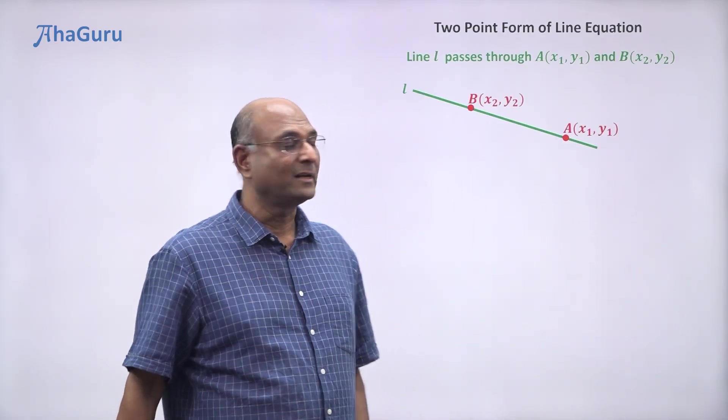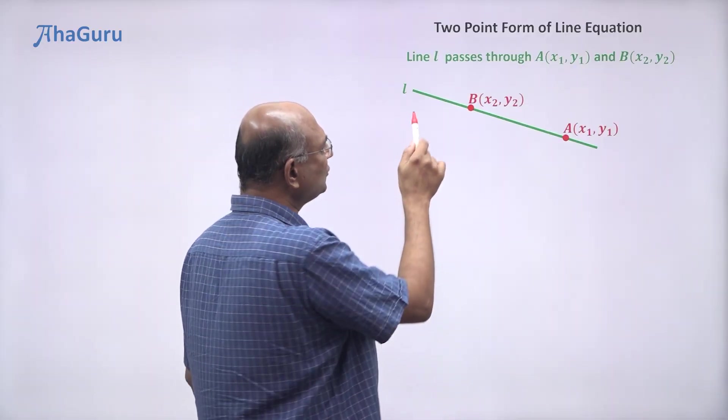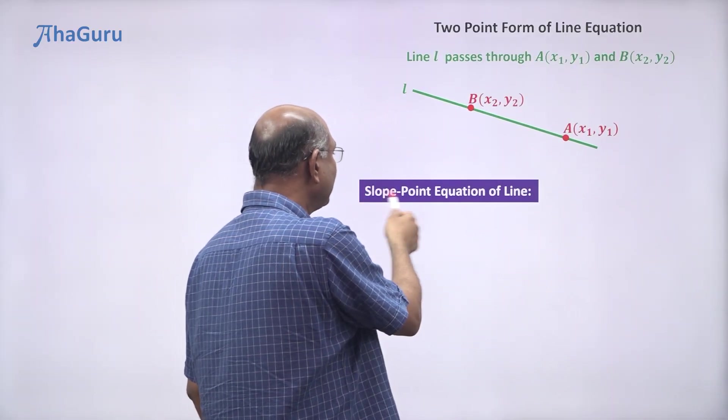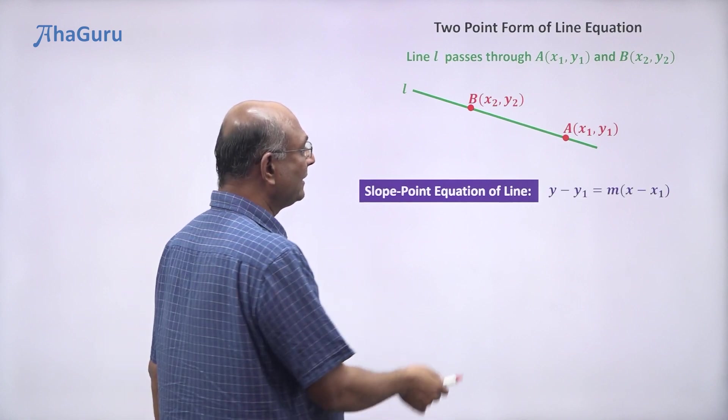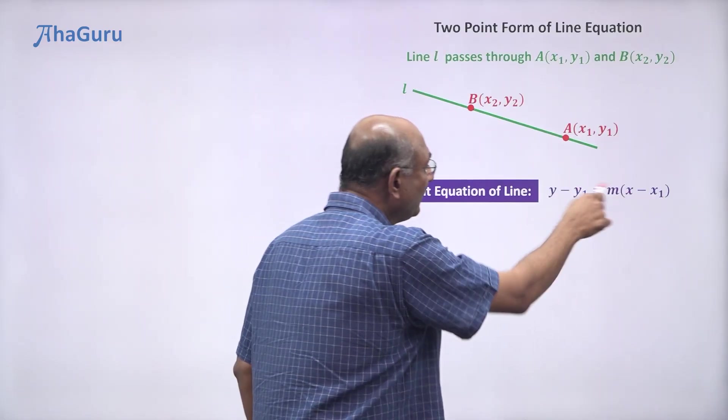Well, it has to be this line in that case. So we want the equation of this line. If you knew the slope of this line and one point, then of course we can write the slope-point equation of the line. It will be y - y₁ = m(x - x₁). Here you know y₁ and x₁.